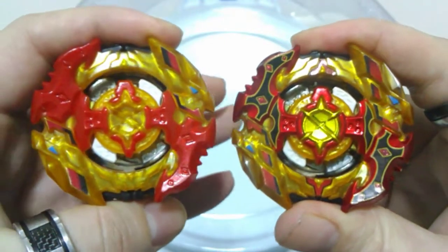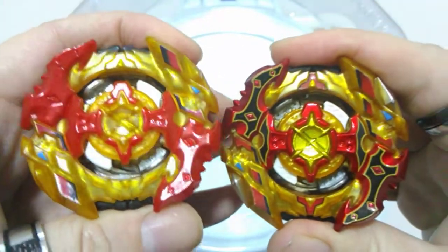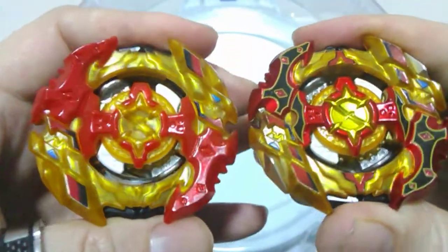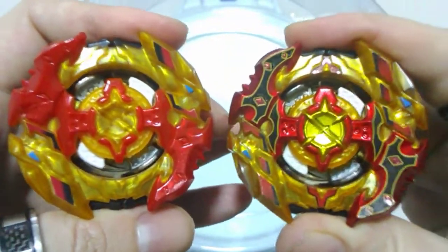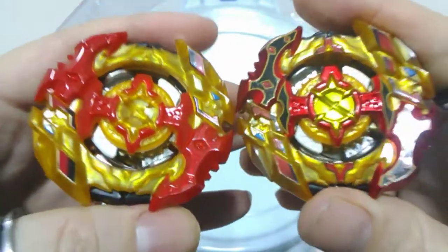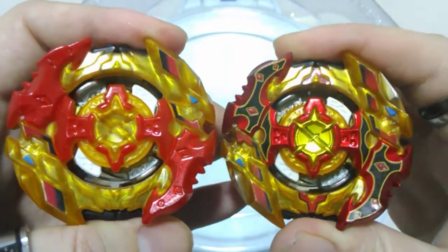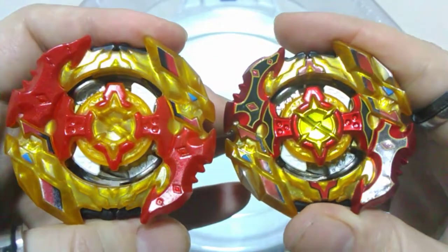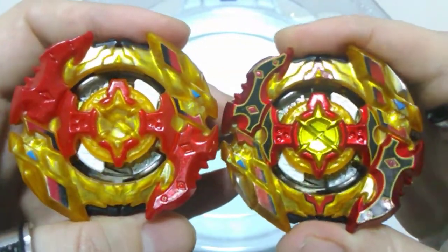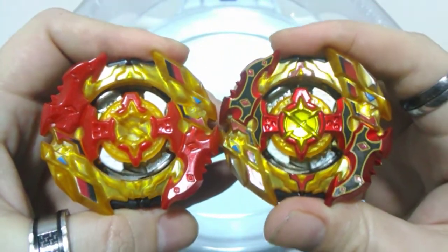Hi everyone, welcome back to another Versus match and today we've got Hasbro taking on Takara Tomi. Turbo Sprizen versus Cho-Z Spriggan will do 12 rounds for these two, changing modes after every second round and then changing stadiums after 6 and also spin directions. So, let's get stuck into the action.